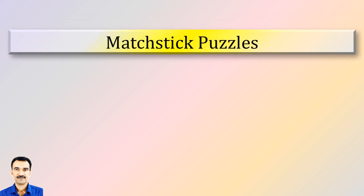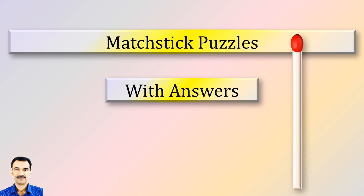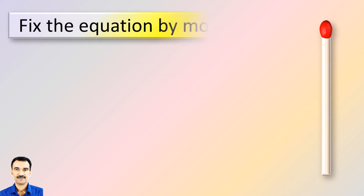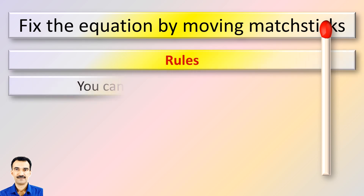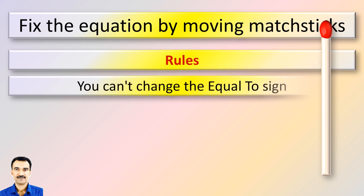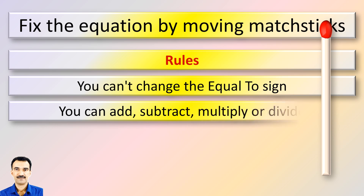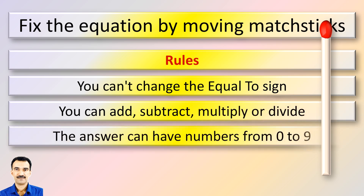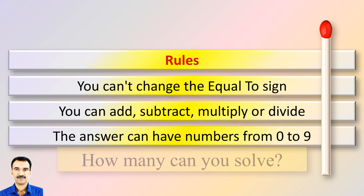Welcome to another video of Matchstick Puzzles with Answers. Please keep the rules in mind. You cannot change the equal to sign. You can add, subtract, multiply or divide. The answers can have numbers from 0 to 9. How many puzzles can you solve?